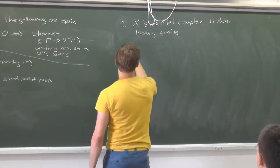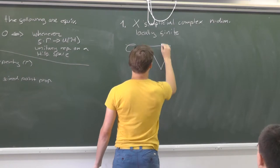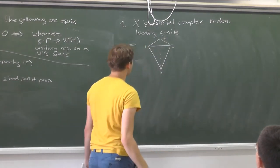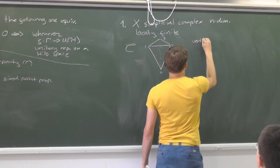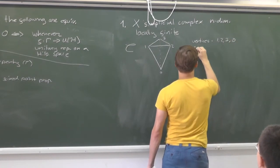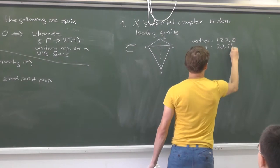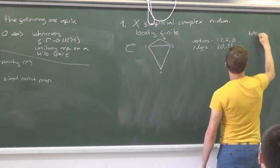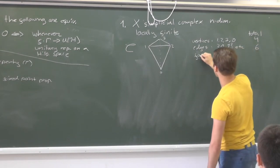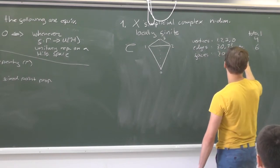The ice cream cone example has vertices — I identify vertices with points — one, two, three, zero, so four vertices. The edges: here I denote them simply by, for example, (0,1), and we have a total of six edges. And then we have faces — three of them.